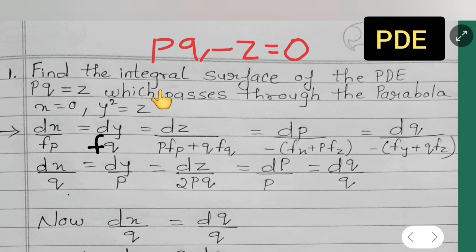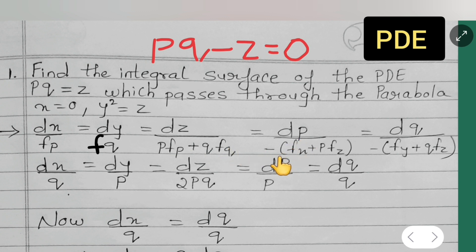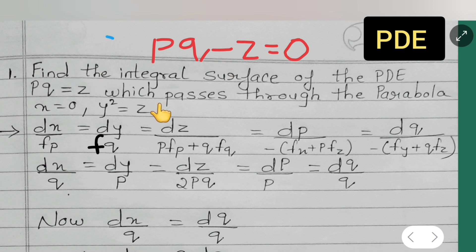Now let us use Charpit's auxiliary equation: dx/Fp = dy/Fq = dz/(p·Fp + q·Fq) = dp/(−Fx − p·Fz). Now, F is nothing but the function F = pq − z. We get this because pq = z, so pq − z = 0.